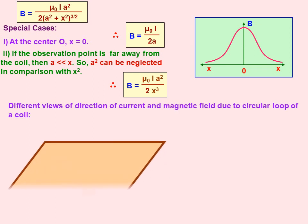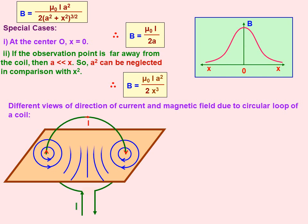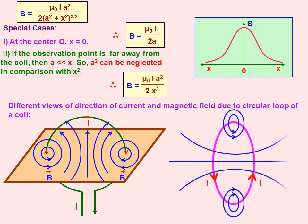Now we look at different views of the direction of current and magnetic field due to a circular loop. If a current-carrying coil passes through a card sheet and iron filings are spread, the magnetic field will form concentric circles with increasing radius. At the middle of the coil, magnetic field lines are straight and parallel, indicating the field is almost constant at the center. When current is anticlockwise, the magnetic field is more near the wire, and decreases as we go away toward the center.